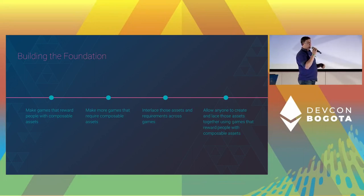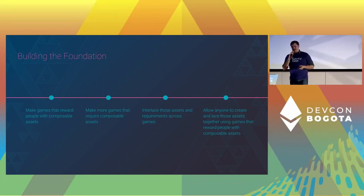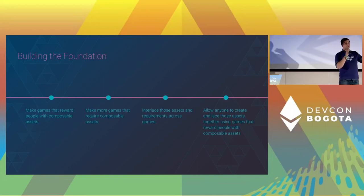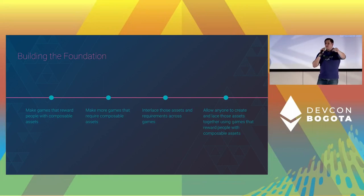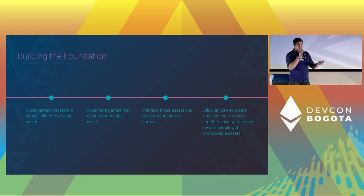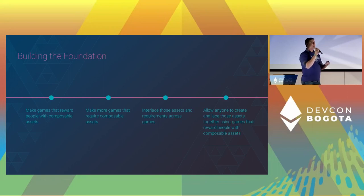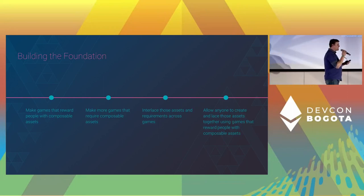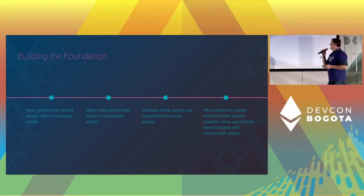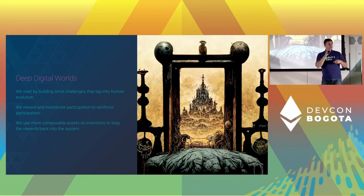If you're familiar with complex systems or complex adaptive systems, how they work is you have a whole bunch of small components that interrelate as part of a system. As they interrelate and as there's more of them, emergent phenomena start to happen. I believe that if we do this with NFTs and we start to connect them together — not just NFTs, but tokens, wallet signatures, all sorts of composable elements that live on the EVM — we'll start to see a new kind of...